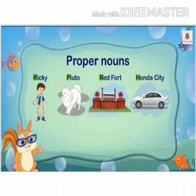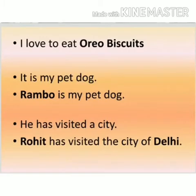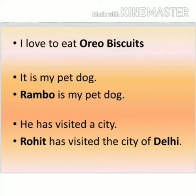For example: I love to eat biscuits. Now it is not clear which biscuit I love to eat. But if I add a name to that biscuit — I love to eat Oreo biscuits — then you will come to know that Oreo is a very tasty biscuit. It is the name of a particular biscuit, and Oreo will always be written in a capital letter because it is a special name.